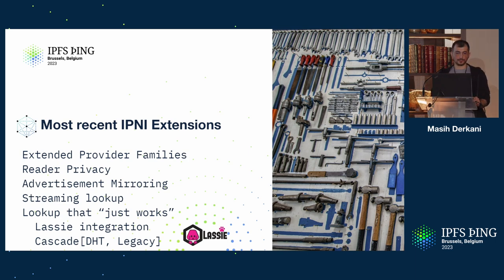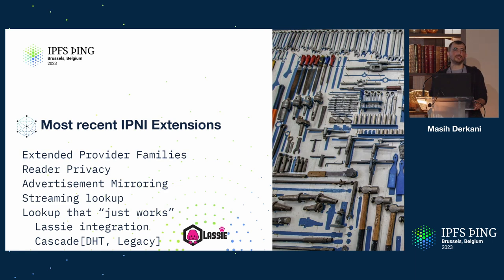Reader privacy is something that will be covered in depth by Ivan later today, and we'll also cover what it means for the DHT. Reader privacy is cross-cutting across multiple content routing systems and fundamentally affects how we exchange information, but not necessarily the lookup algorithm itself. It's a neat user-centric improvement, and very welcome.